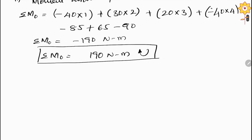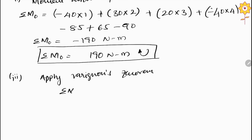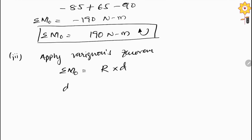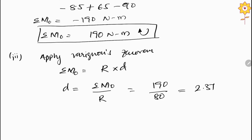The third step is to apply Varignon's theorem to find the distance of the resultant. The formula is: summation of M about O equals resultant R times distance d. Rearranging, d = summation of moments divided by resultant = 190 divided by 80, which gives d = 2.375 meters.